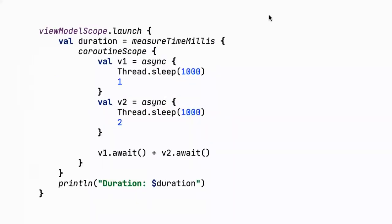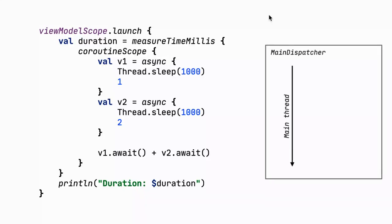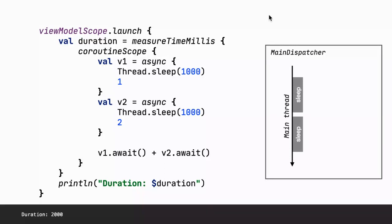What happens if we use non-main-safe methods with async? For example, Thread.sleep is not main-safe — it blocks the main thread. In this example using coroutineScope with Thread.sleep inside async blocks, async uses the dispatcher from the parent scope, which is the main dispatcher from viewModelScope. The main dispatcher manages a single thread, so both Thread.sleep calls execute on the main thread sequentially. We get the result after two seconds from a single-threaded blocking call — that's bad.